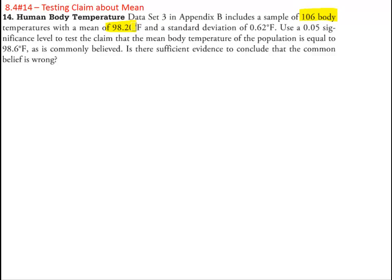With a mean of 98.2 and a standard deviation of 0.62, we are going to use a 0.05 significance level to test the claim that mean body temperatures of the population is equal to 98.6. So let's just write all that information down. We have n equals 106, x bar equals 98.2, and we have the standard deviation of our sample 0.62.